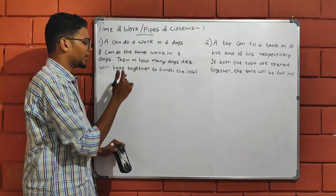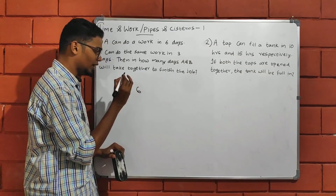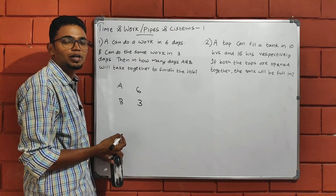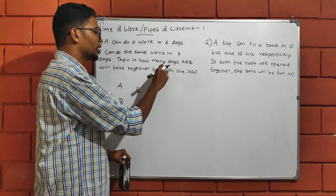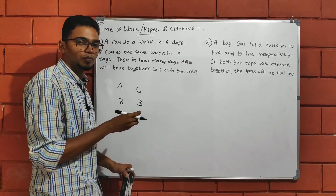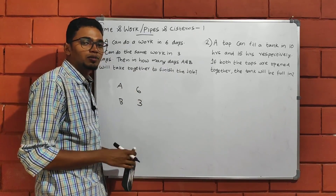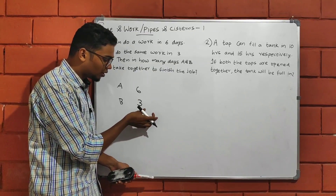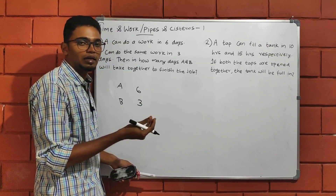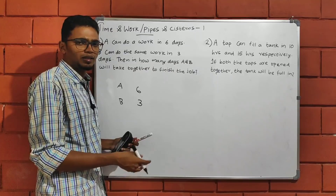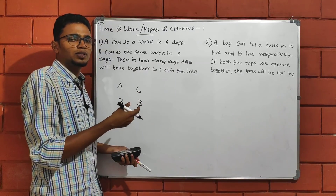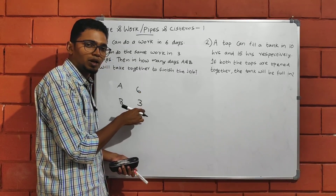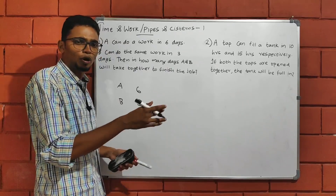A can do the work in 6 days, and B can do the same work in 3 days. Using the LCM method, we take the LCM of 6 and 3, then divide by the respective values to find each person's work rate per day.